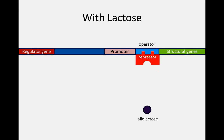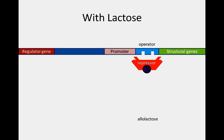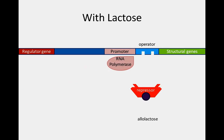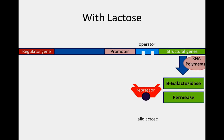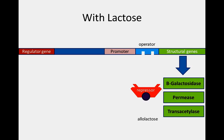In the presence of lactose, allolactose — an isomer of lactose — binds to the repressor molecule and causes it to change shape. In its new conformation, the repressor molecule cannot bind the operator. With the operator free, RNA polymerase is free to bind the promoter and proceed with transcription of the structural genes. In the end, beta-galactosidase, permease, and transacetylase are produced and utilized to break down lactose for the cell to use.